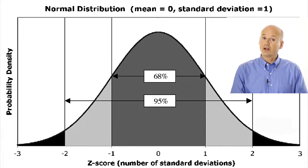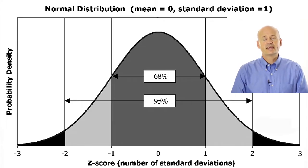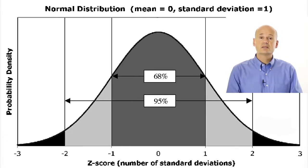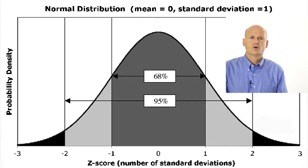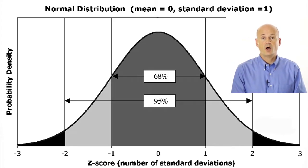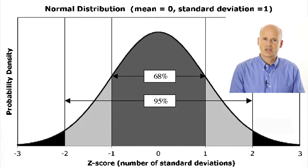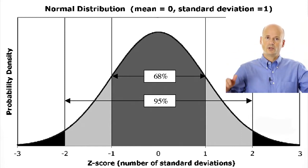Some of you will know it as the bell curve, or if you're fancy, the Gaussian distribution. So why is the normal distribution important? Well, in medicine, we love to measure things. We measure all sorts of things, and most of these things fall on a normal distribution.